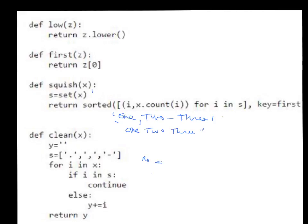Before we look at the main program, notice that there are four functions that will be used. The first two — low and first — are used basically when we do sorting. The squish function is the one we just talked about, which changes the format of the list of line numbers. The one we'll use right away is called clean. What clean does is clean up a string, because when we read the file we read it as one long string, but the Gettysburg Address has characters like commas, dashes, and so on that are not really part of the word. Clean strips those out so we just have the words.